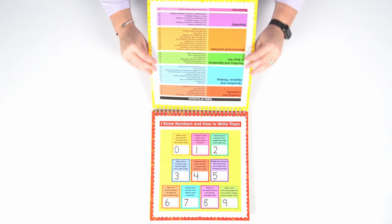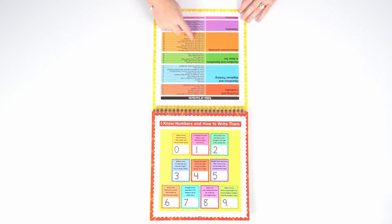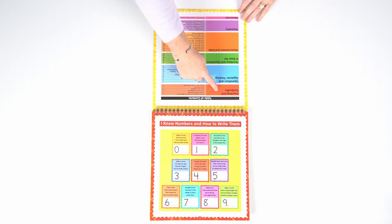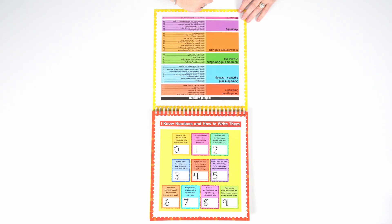As you can see when you open up the flip chart, you have a table of contents that has all of the pages broken down by strand.